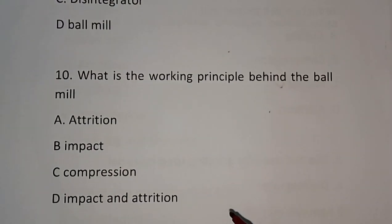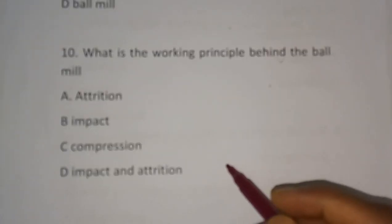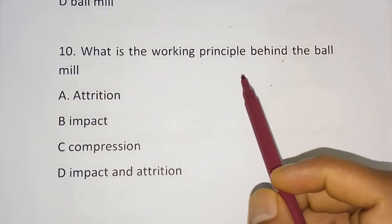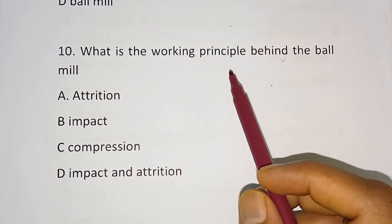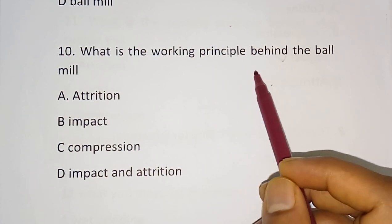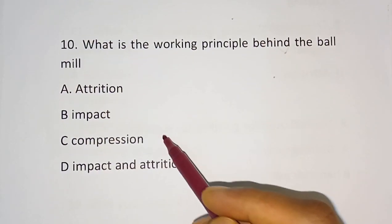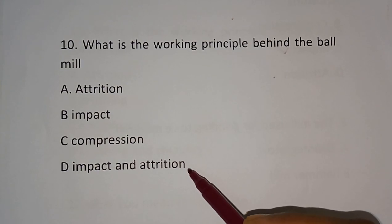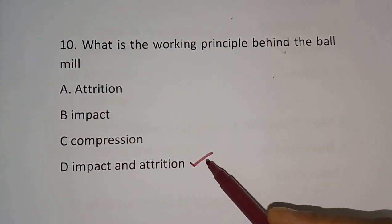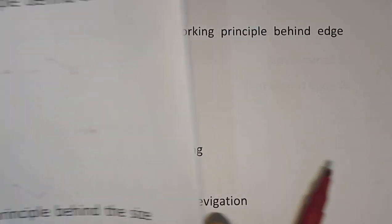Next question: What is the working principle behind the bowl mill? We already studied this in the second-to-last question. Options are: attrition, impact, compression, impact and attrition. The correct answer is impact and attrition.